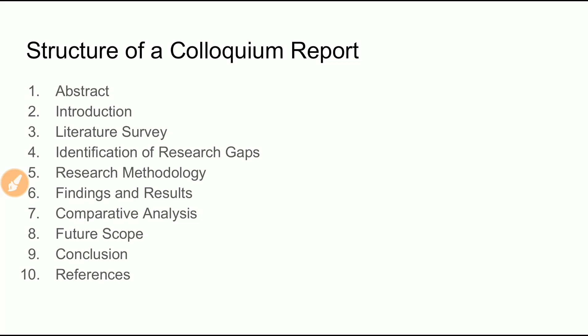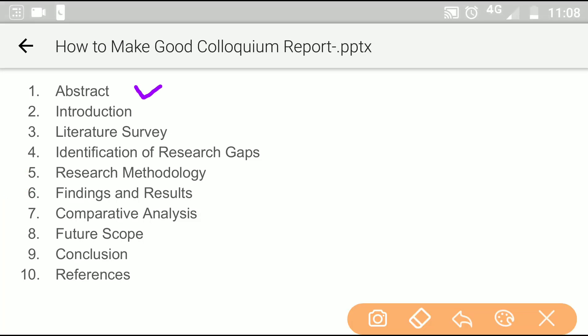The structure of a colloquium report should contain around 10 heads. You can include some more heads as per your requirement, or you can also exclude some heads if you think they are not suitable for your topic. The first head is the abstract.